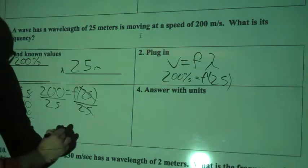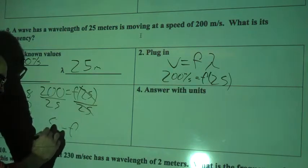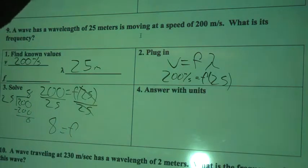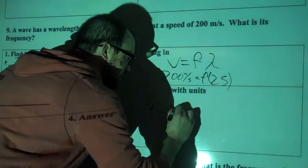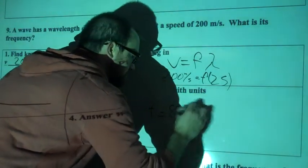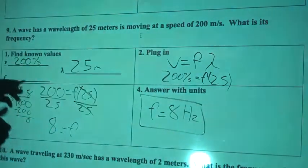OK, we're left with nothing. So I know that F, or my frequency, equals 8. And then I'm going to rewrite that over here on the other side with the correct units. So F equals 8 Hertz. And that's it.